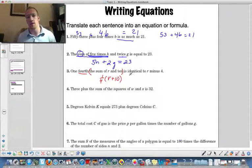Is identical to, so that's our equal sign. Oh, come on. r minus 4. Okay.